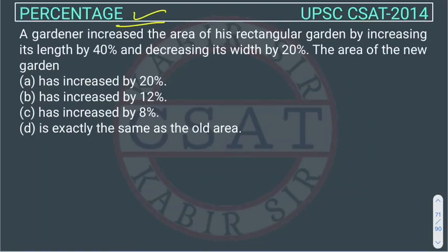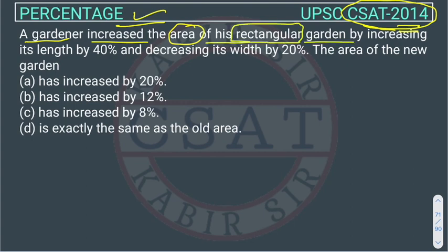This is the percentage question asked in UPSC CSAT 2014 exam. A gardener increased the area of his rectangular garden by increasing its length by 40% and decreasing its width by 20%. The area of the new garden...